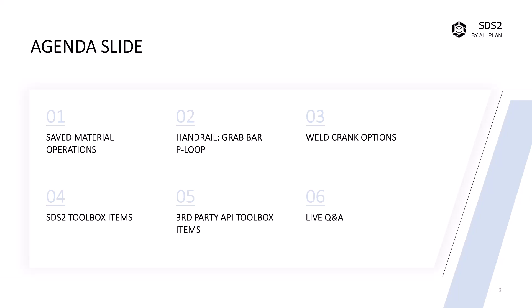Here's the agenda. We're going to talk about saving material operations — some of these have already been in the software for a bit. We're going to expand on that with new enhancements brought in version 25: the handrail grab bar P loop, the weld crank option that's been a request for quite some time. Then we'll dive over to SDS toolbox items, get into third-party API toolbox items, and then get into your questions. So without further ado, let's get started.